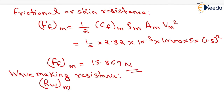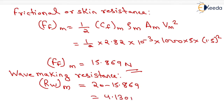Now wave making resistance Rwm equals 20 minus 15.869, which equals 4.130 Newton. That completes the analysis of the model.